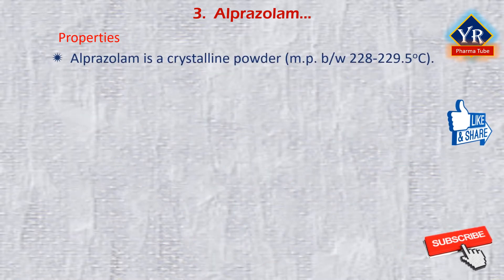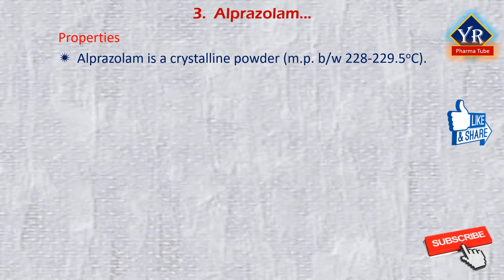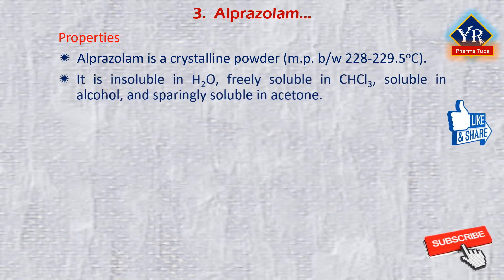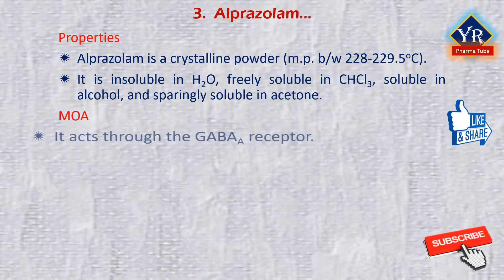Alprazolam is a solid crystalline powder with a melting point between 228 and 229.5 degrees centigrade. It is insoluble in water, freely soluble in chloroform, soluble in alcohol, and sparingly soluble in acetone. It is stable under recommended storage conditions, but when heated to decomposition emits toxic fumes of hydrogen chloride and nitrogen oxides. Like other benzodiazepines, alprazolam acts through the GABA-A receptor.